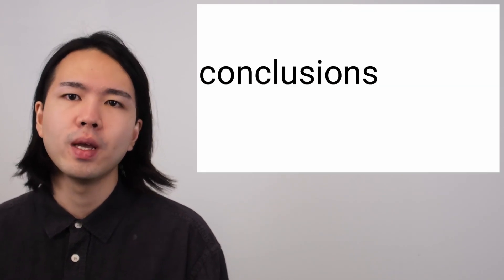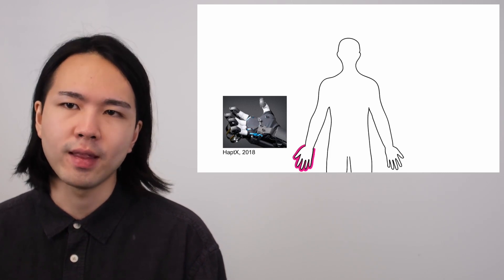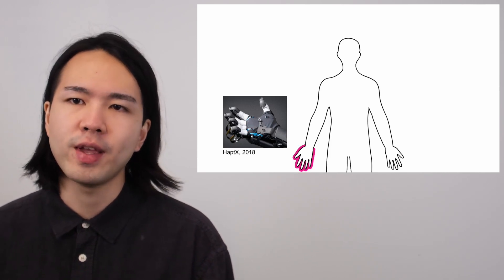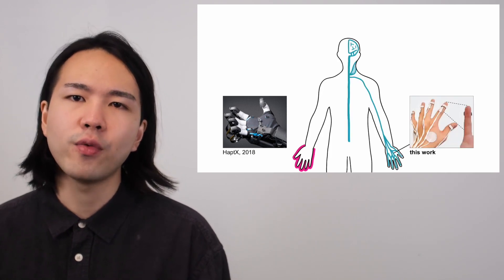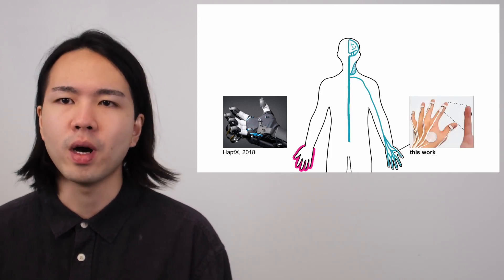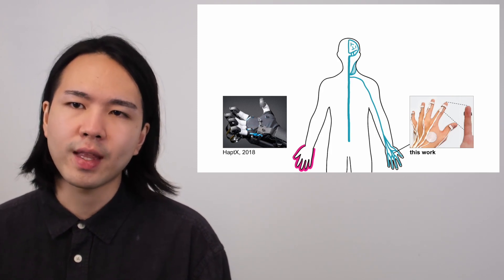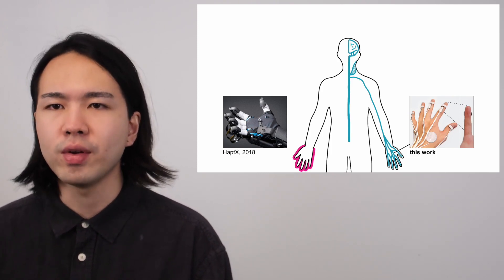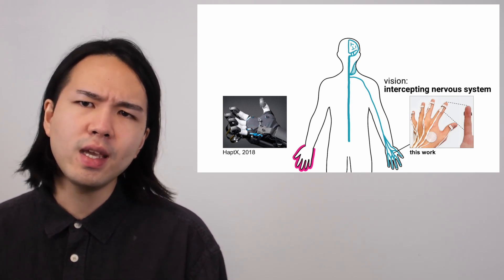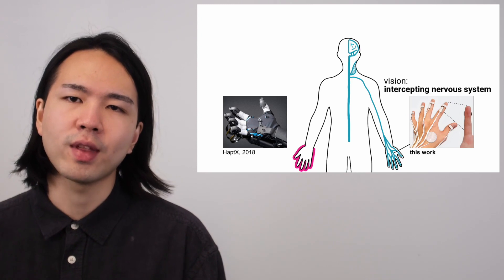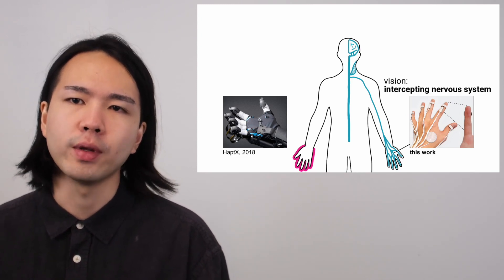So to conclude, today I proposed an alternative to the mainstream haptic devices that prevent the user from feeling the physical world. Our technique renders tactile feedback in multiple parts of the palm while keeping it completely free, preserving the user's tactile acuity and manual dexterity during interactions with physical objects. The key here is to intercept the user's nervous system, rather than attaching actuators at the endpoint.